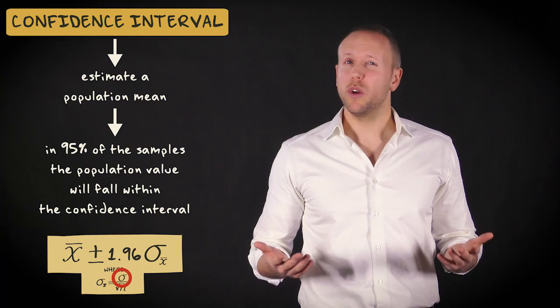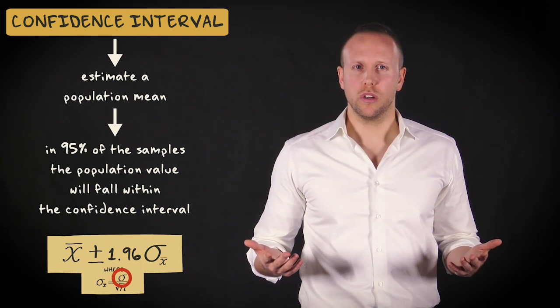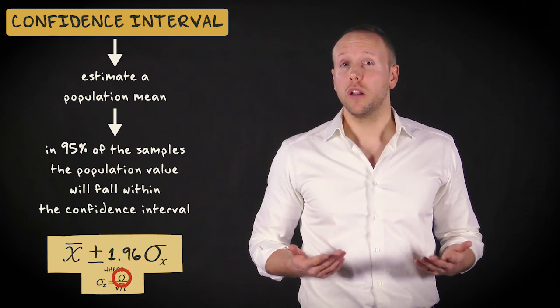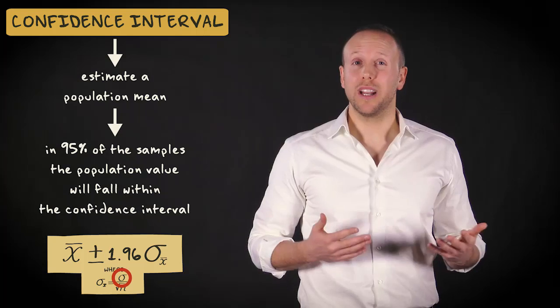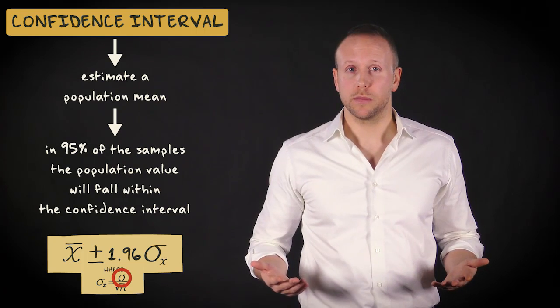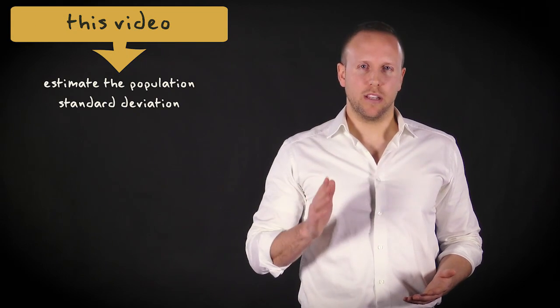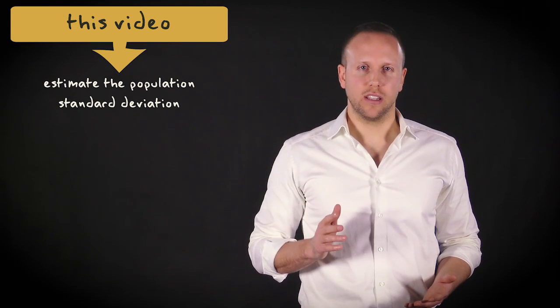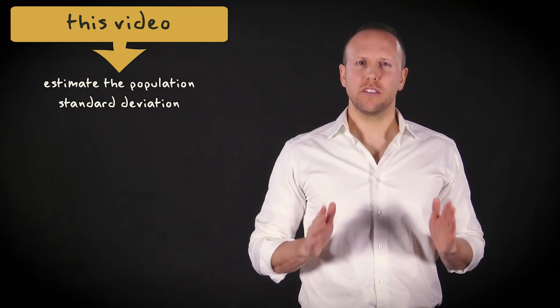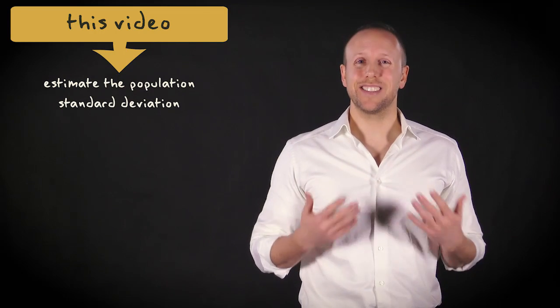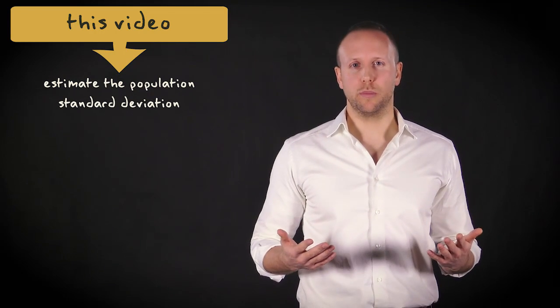Usually we don't know this value. After all, we use the sample to draw inferences about population parameters. In this video, I show you how you can solve this problem. The solution is that we estimate the population standard deviation, and therefore have to employ another distribution than the standard normal distribution.